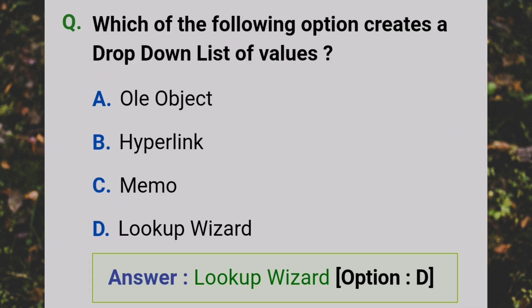Which of the following options creates a drop-down list of values? Answer: D - Lookup Wizard.